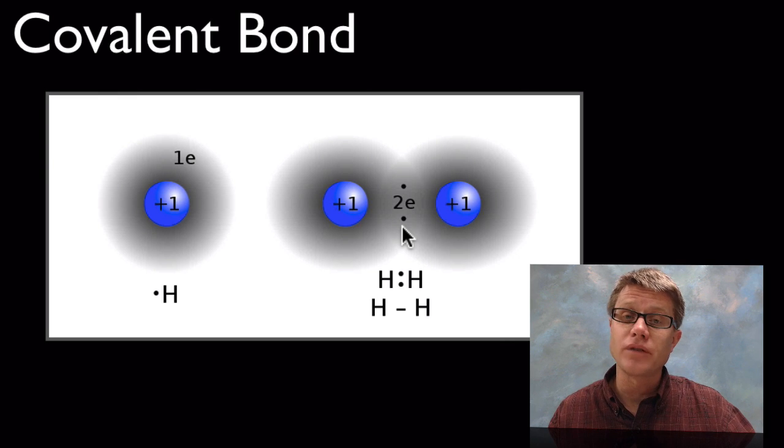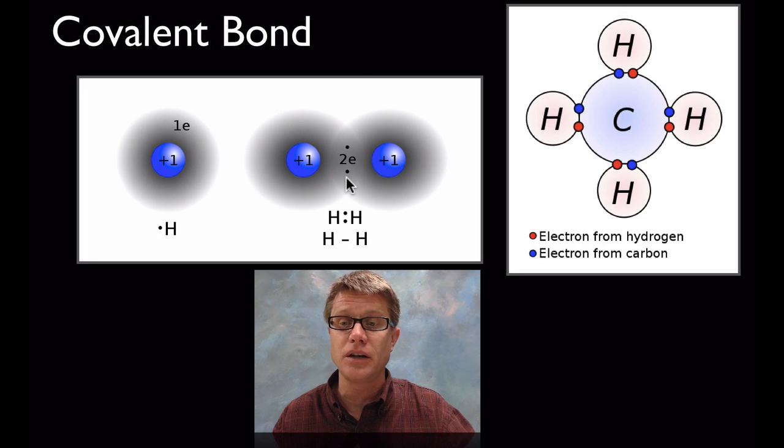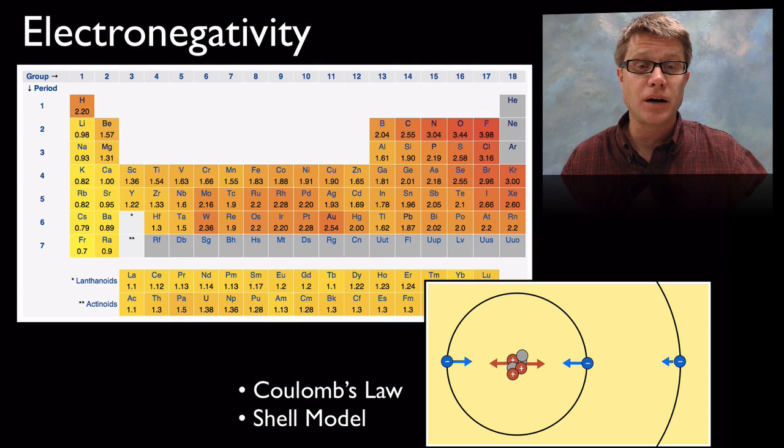Carbon for example has four valence electrons. According to the octet rule it would like to have eight. What it can do is it can share each of those four electrons with another hydrogen atom, and now we have methane which is going to be a nonpolar covalent bond.